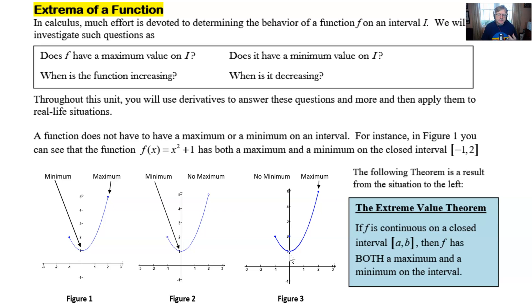So the following theorem is a result of the situation to the left and it's a big one. The extreme value theorem says that the function f if it's continuous on a closed interval a to b then f has to have both a maximum and a minimum value on the interval and that's indicative there in figure one.